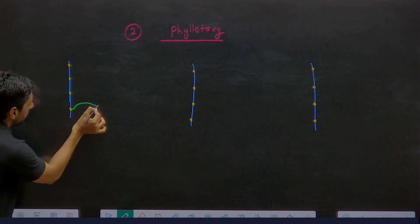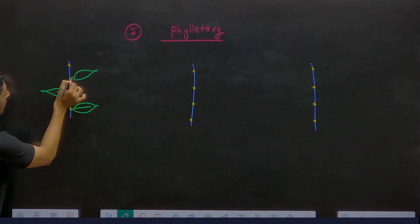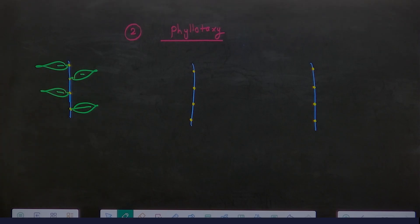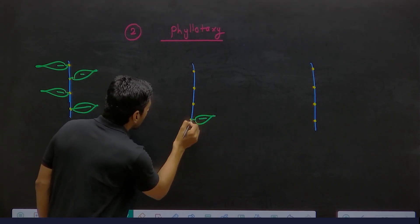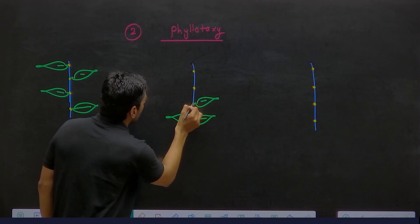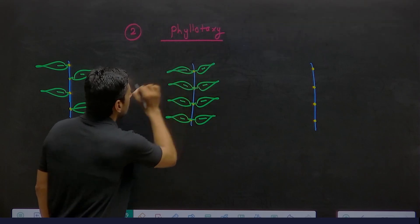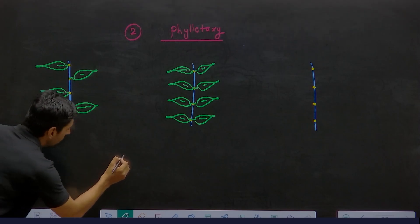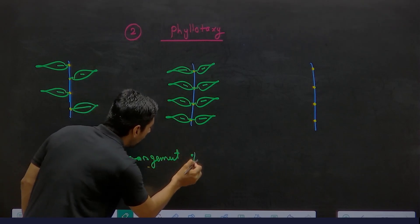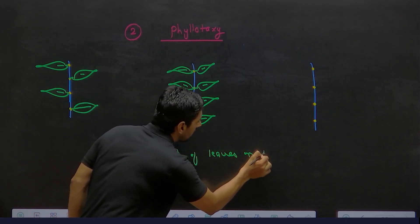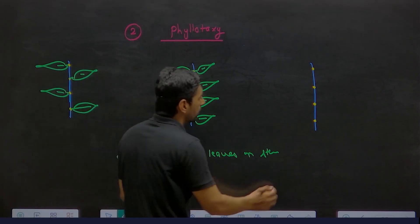Now I am drawing one leaf here on this side. Now the second thing we will describe — first understand the picture. Are they looking different? Very good. This is the second type of arrangement. What are we talking about? Arrangement — whose arrangement? Leaves' arrangement on stem. This is called as phyllotaxy. What is the meaning of phyllotaxy? Arrangement of leaves on stem is called as phyllotaxy.